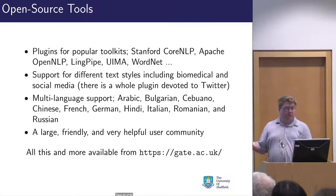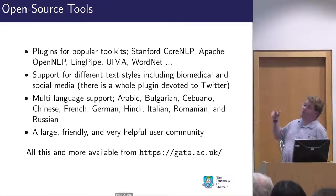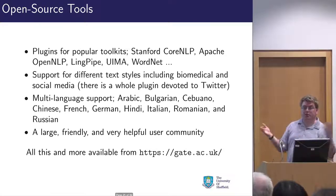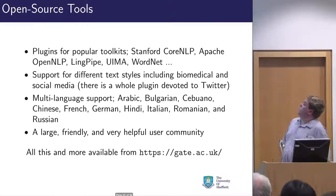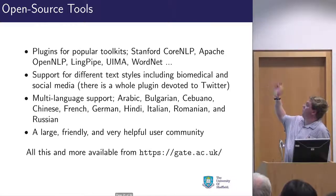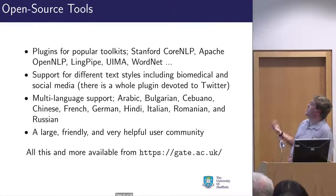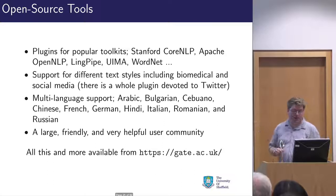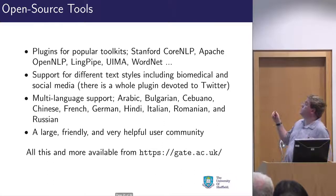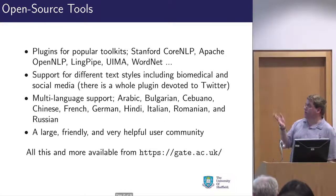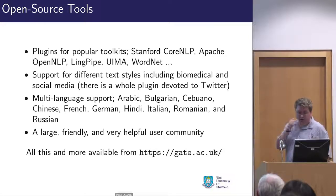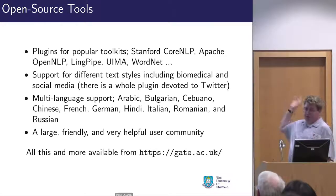GATE as an architecture has plugins for popular toolkits — Stanford NLP, Apache OpenNLP, WordNet, and more — so you can combine them without writing a lot of glue code. It supports different text styles: not just newswire, but biomedical text, social media, and a specific Twitter plugin, plus support for many languages and a large community of users.